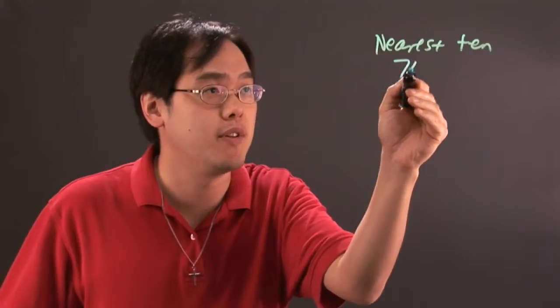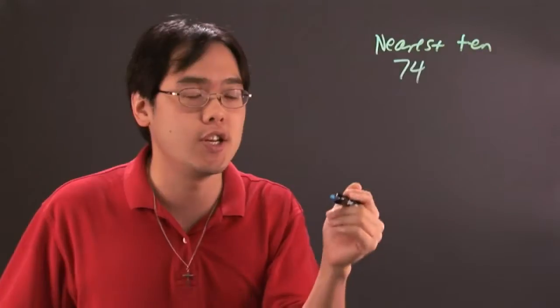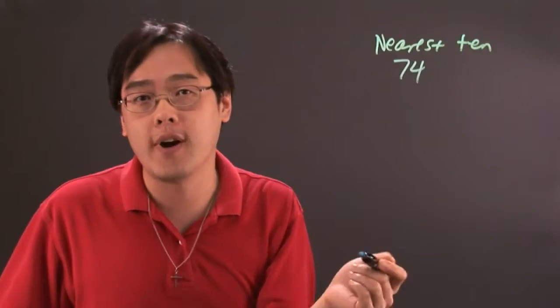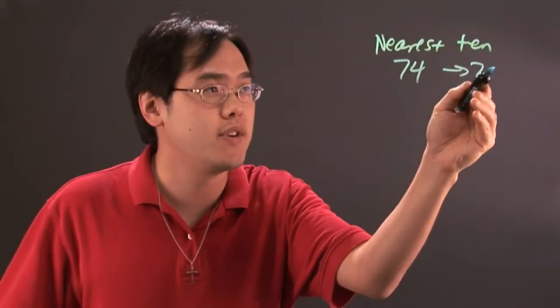For example, if you have 74, using the rules of rounding—5 or above you round to the next digit and below 5 you round down—74 rounds to 70.